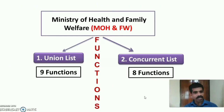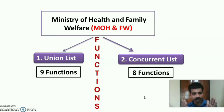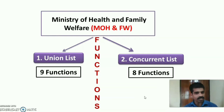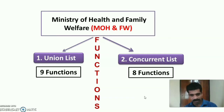The functions of the Ministry of Health and Family Welfare are scheduled in the Seventh Schedule of the Indian Constitution as the Union List and Concurrent List. The Union List contains nine functions of the Central Government, while the Concurrent List includes eight functions to be carried out by both Central and State Governments.